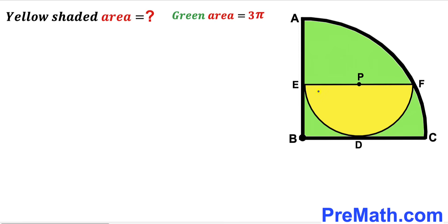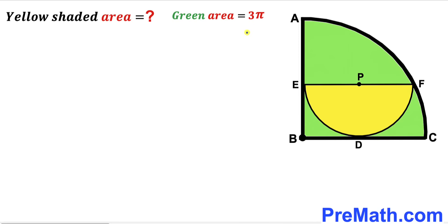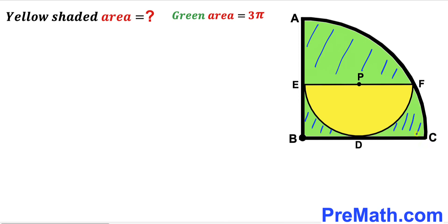Welcome to PreMath. In this video we have a yellow shaded semicircle with center P fully inscribed in a quarter circle with center B, such that diameter EF is parallel to radius BC. The area of the green shaded region — consisting of the regions outside the semicircle but inside the quarter circle — has been given as 3π square units. Our task is to find the area of the yellow shaded semicircle.